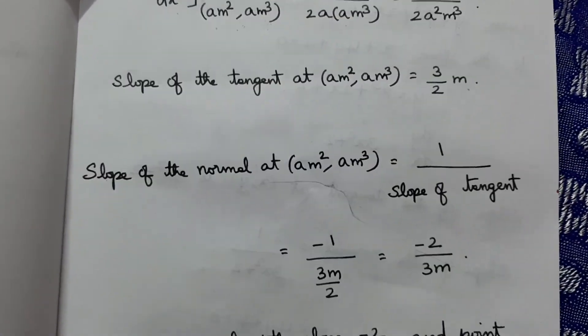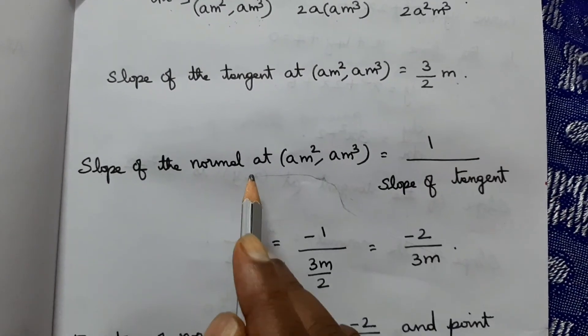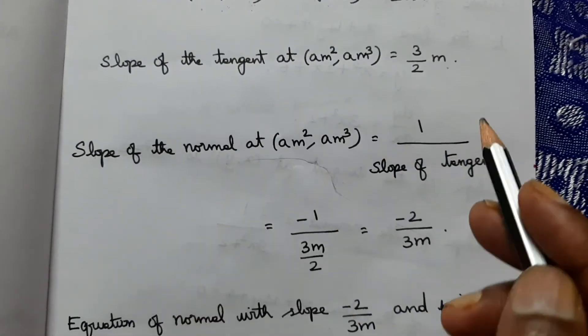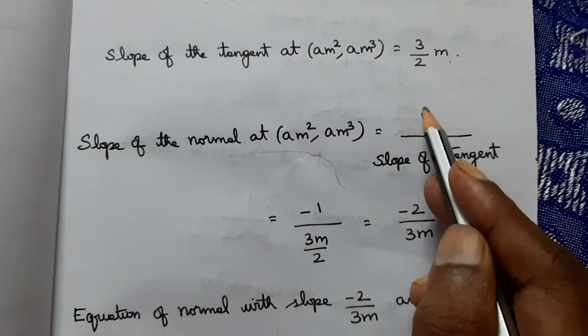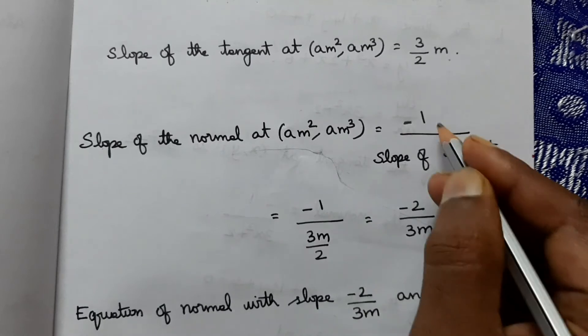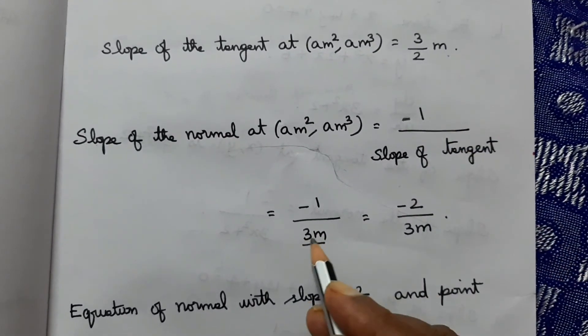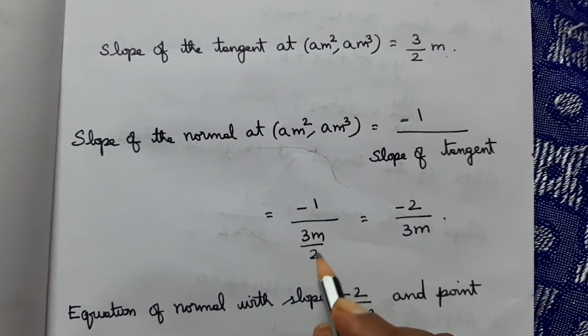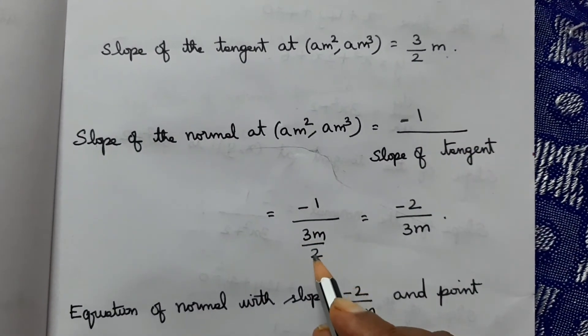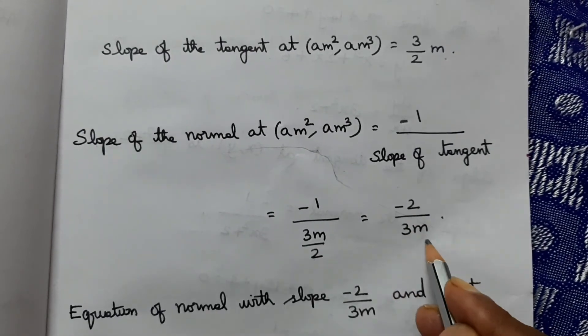The slope of the tangent is 3m/2. Therefore the slope of the normal = -1/(3m/2) = -2/(3m).